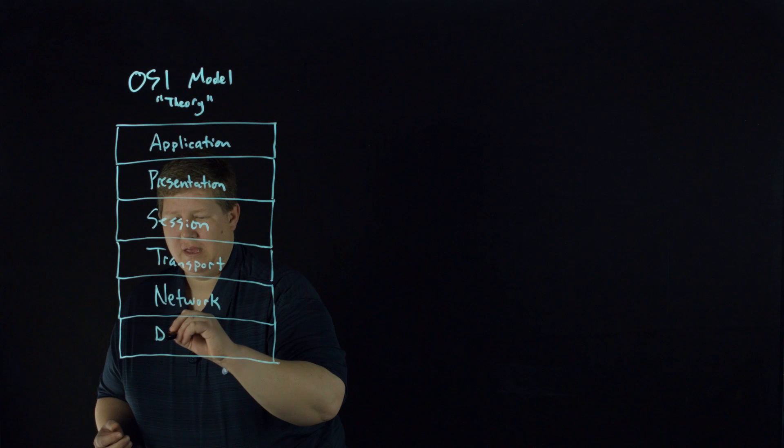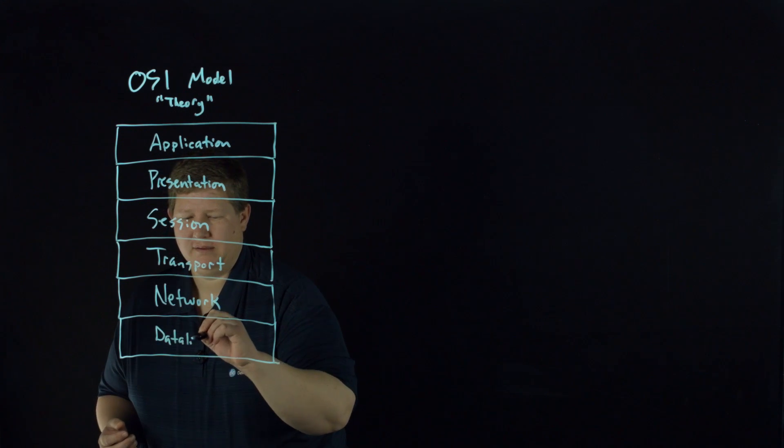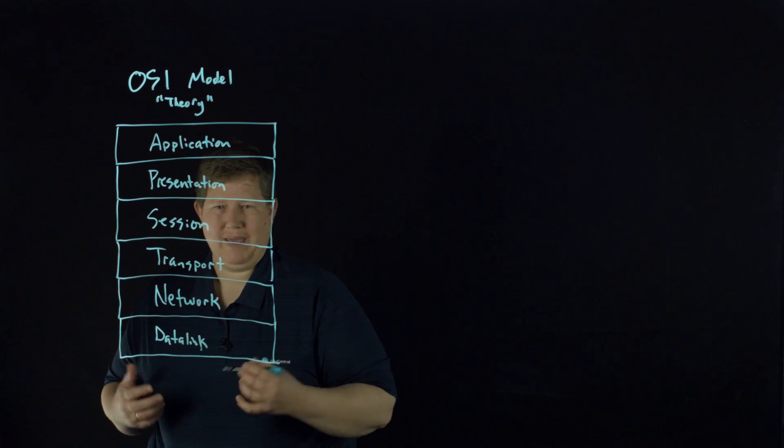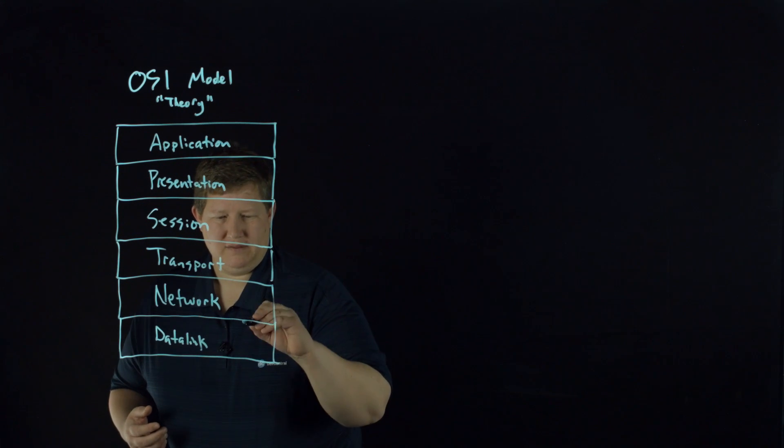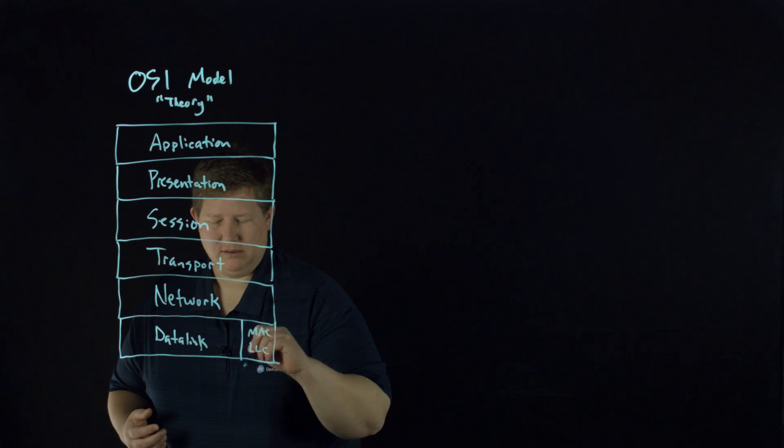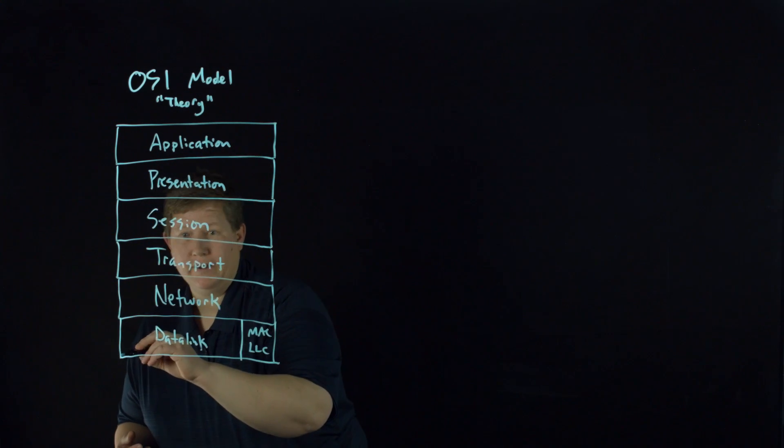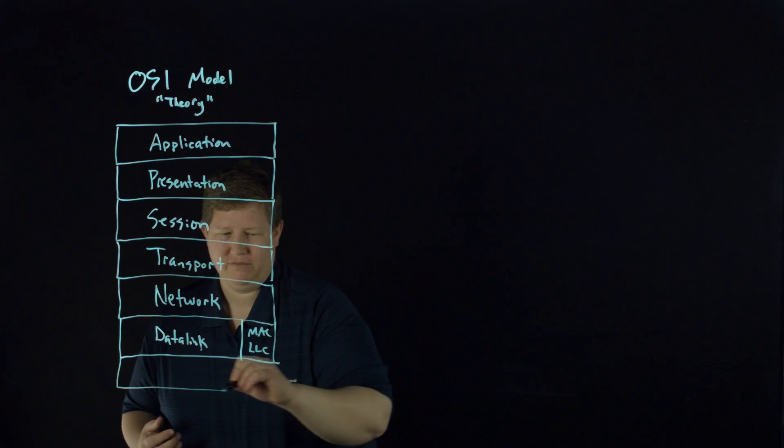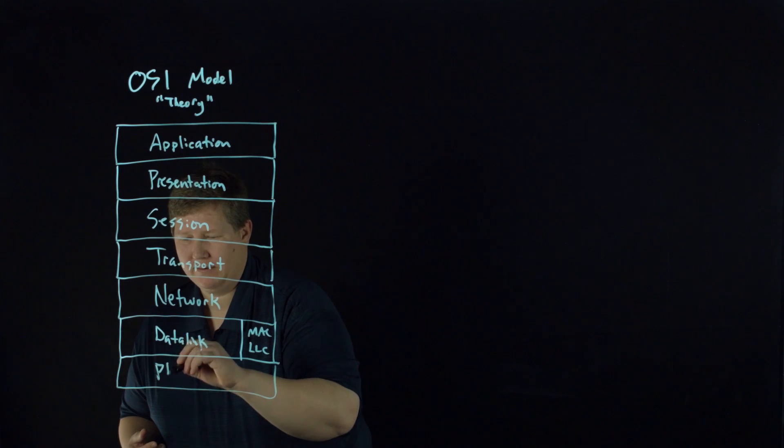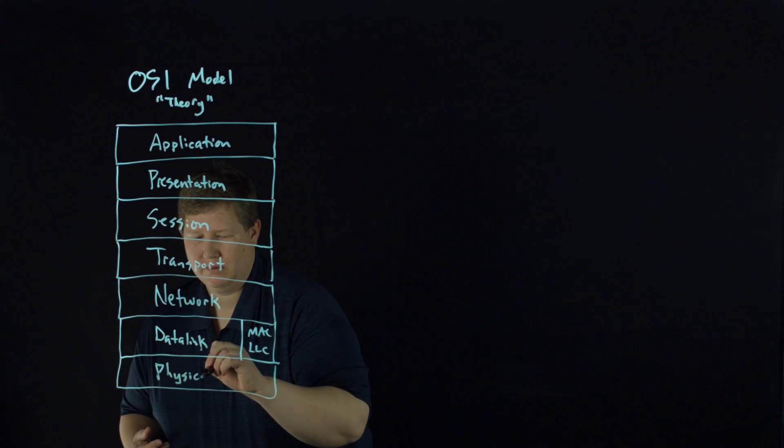And then you have the data link layer. This is your switching layer, MAC addresses. This is your MAC and logical link layer. And then you have your physical layer.